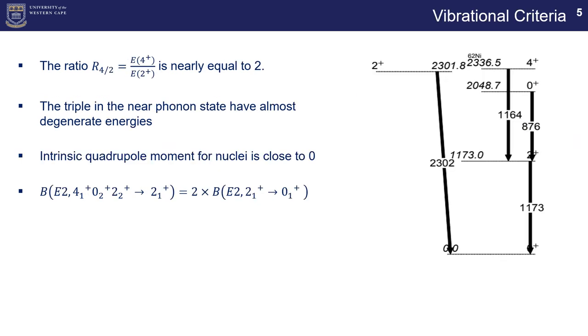So the vibrational criteria, there's a few and I'll be going through them a bit just to discuss what exactly how relevant they are to nickel 62. One of the criteria is that the ratio for the 4 plus and 2 plus energies is roughly equal to 2, and you can see that by the 1173 energy and the 2336 energy of the 4 plus and 2 plus states for nickel 62, the ratio between them is roughly equal to 2. Following that, we can see the triplet in the near phonon states have almost degenerate energy. So what that means is that the second zero plus, the second two plus, and the four plus states are roughly equal to each other in terms of energy, not identical but roughly about equal to each other.